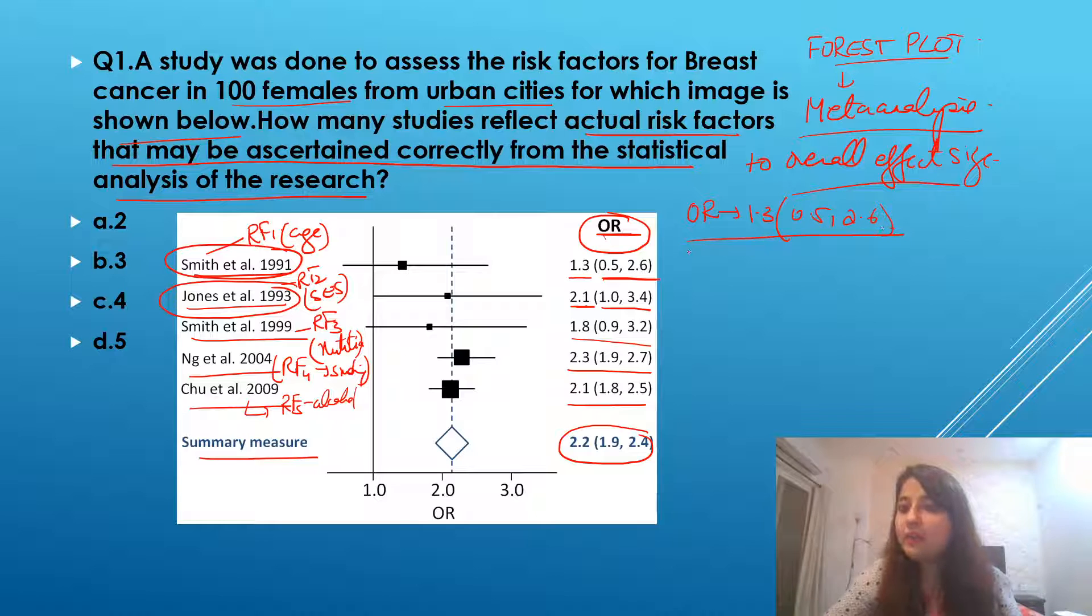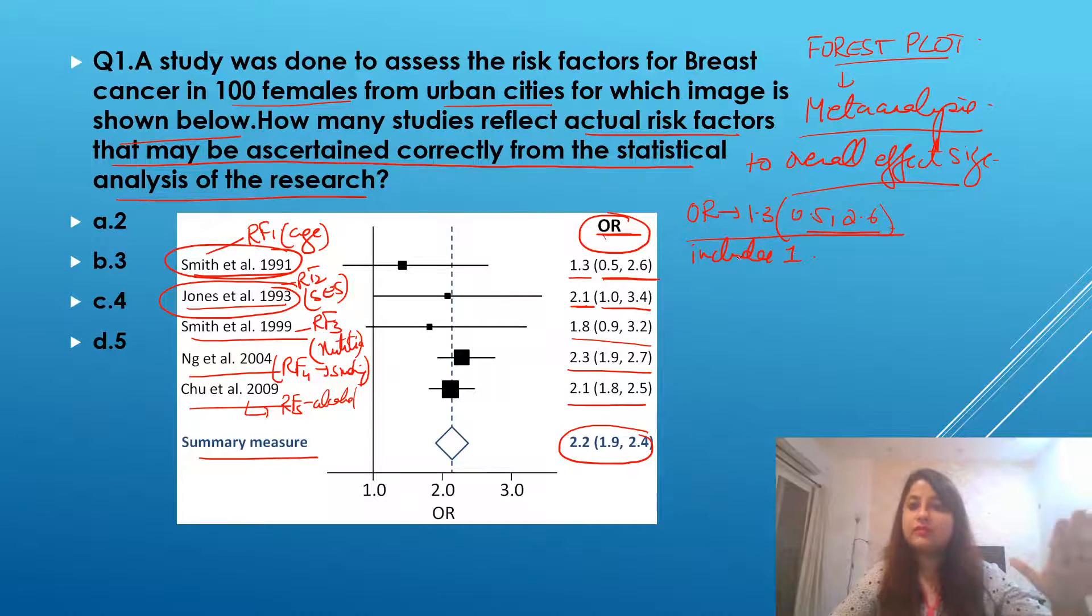Now, this odds ratio interval, does it include one or does it not include one? This definitely includes one. Just listen to this, what I am saying. You will know the interpretation.